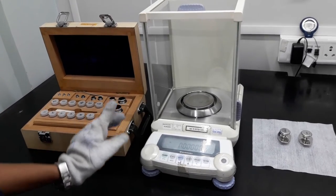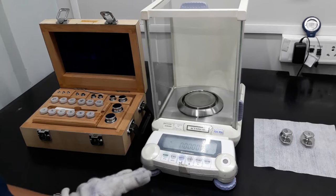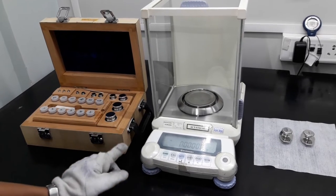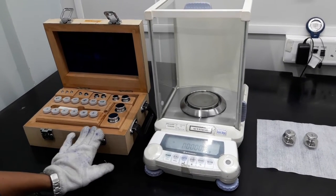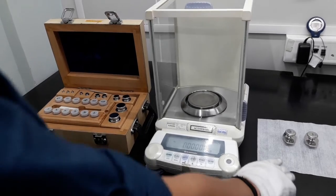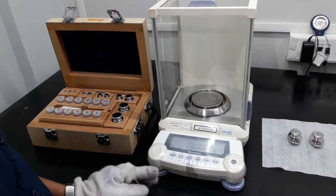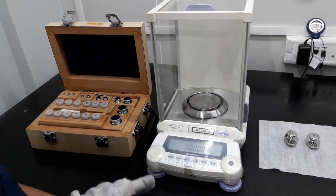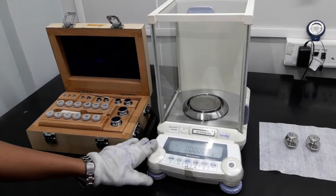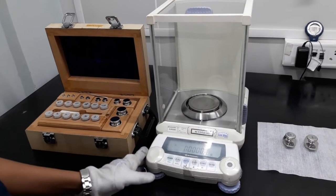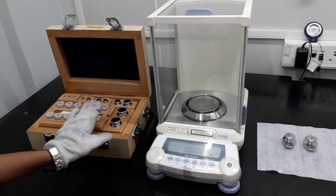Analytical weights are calibrated by ABBA method, where A represents weighing of reference weight and B represents weighing of test weight. This will be calibrated on a dual range weighing balance of class 1 and analytical stainless steel weights of E1 class.